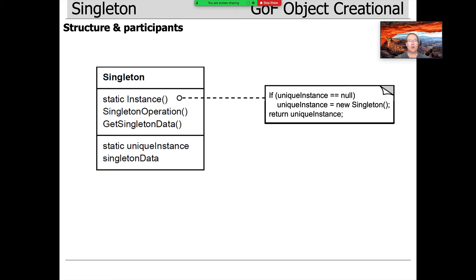Here's the structure and participants. This is arguably one of the simplest Gang of Four patterns, because you basically have a class with a static method called instance. As you'll see, the options class and the reactor class are examples of such classes.